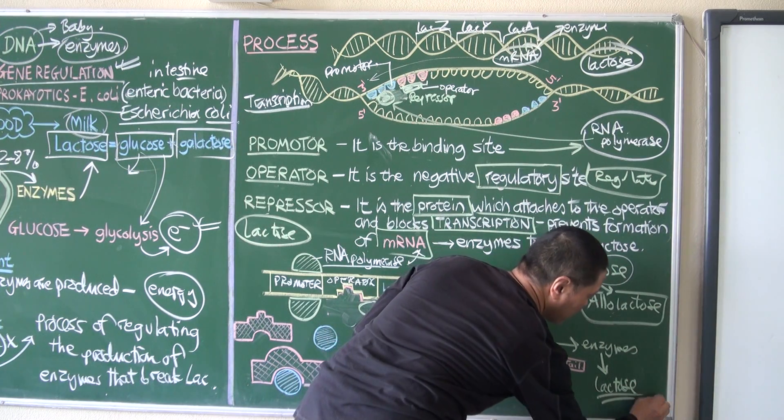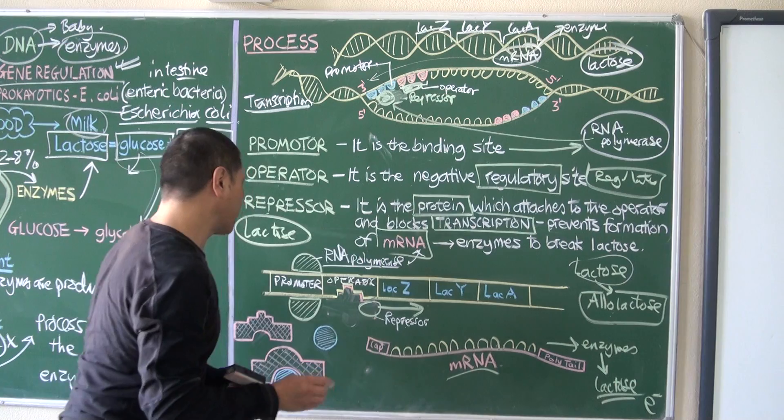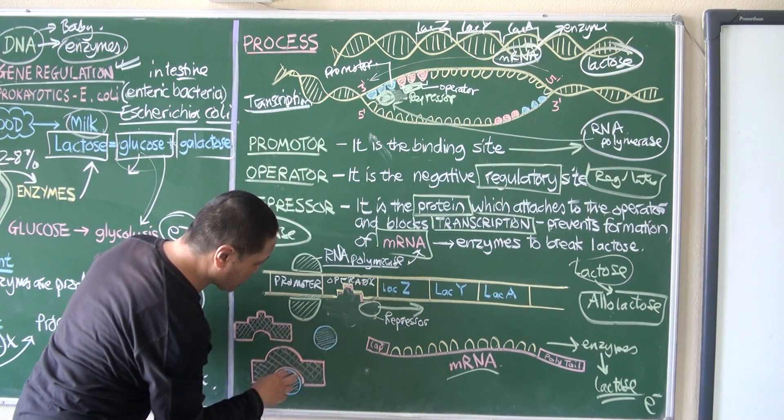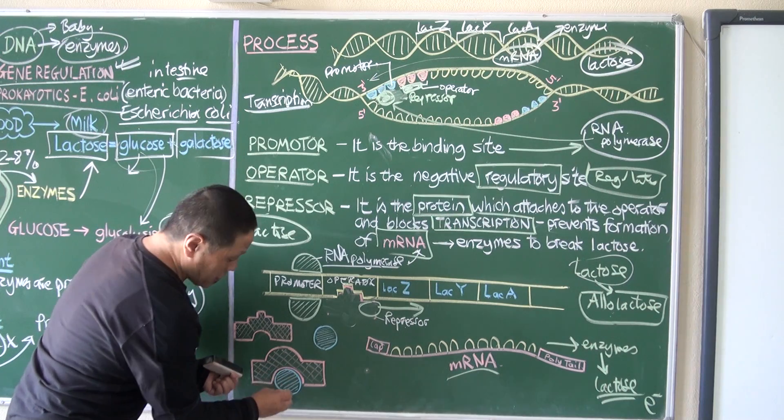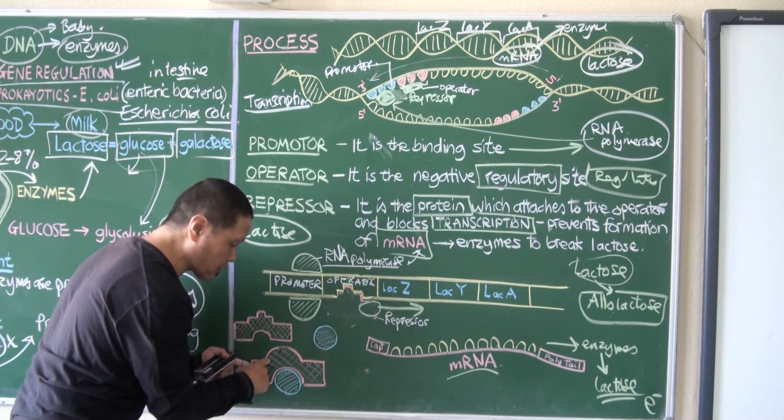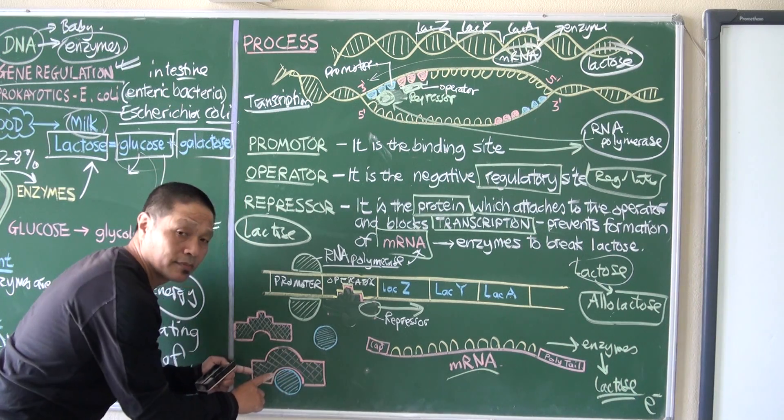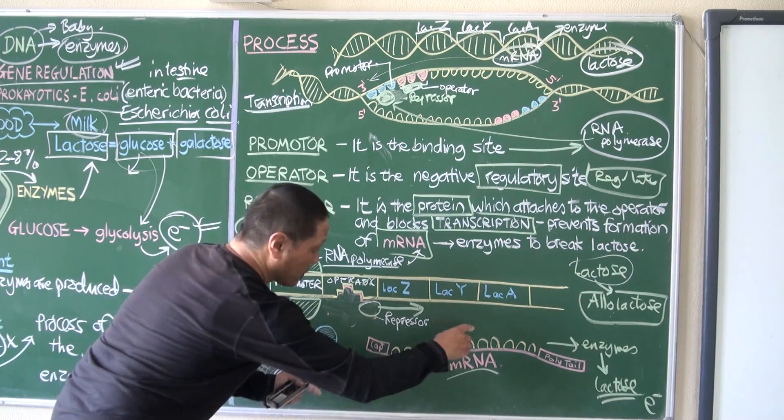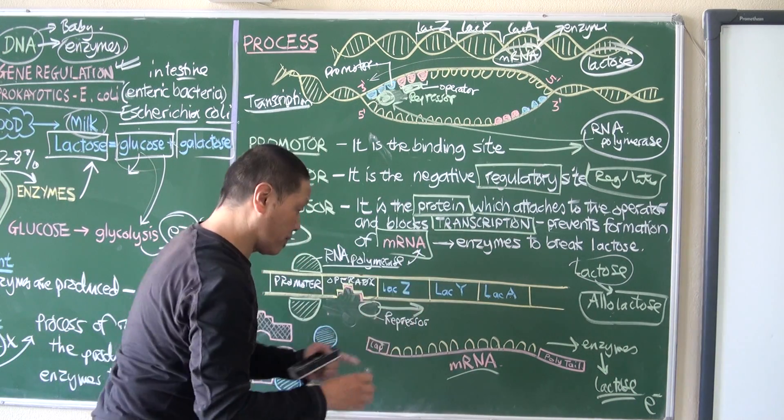And finally you get the energy required by the bacteria. And when this is all used, when the lactose is fixed to the repressor and the repressor has - I mean the shape of the repressor has been changed, therefore it cannot fix itself.